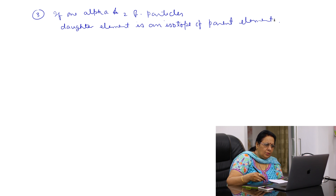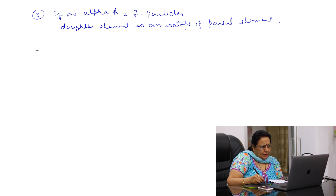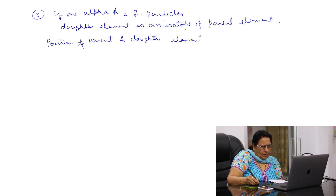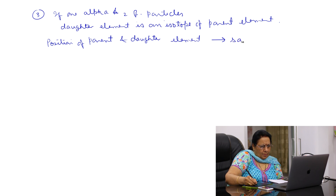Hence, according to the Group Displacement Law, the position of the parent and daughter element remains the same in the periodic table.